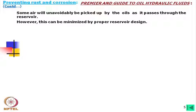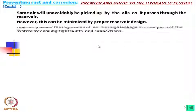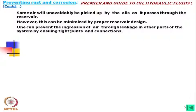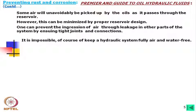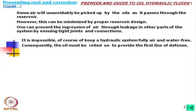One can prevent the ingression of air through leakage in other parts of the system by ensuring tight joints and connections. Through leakage paths at joints, air also gets mixed into the system, so such joints must be made as leak-proof as possible. It is impossible to keep a hydraulic system fully air and water free; consequently, the oil must be relied on to provide the first line of defense.